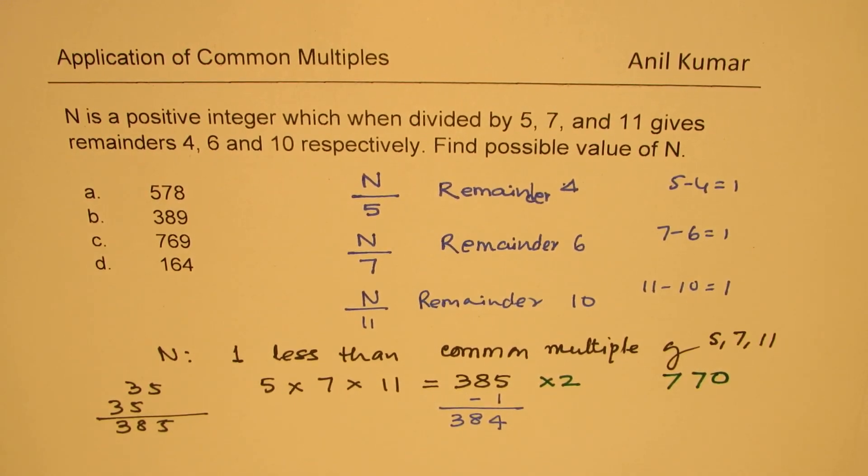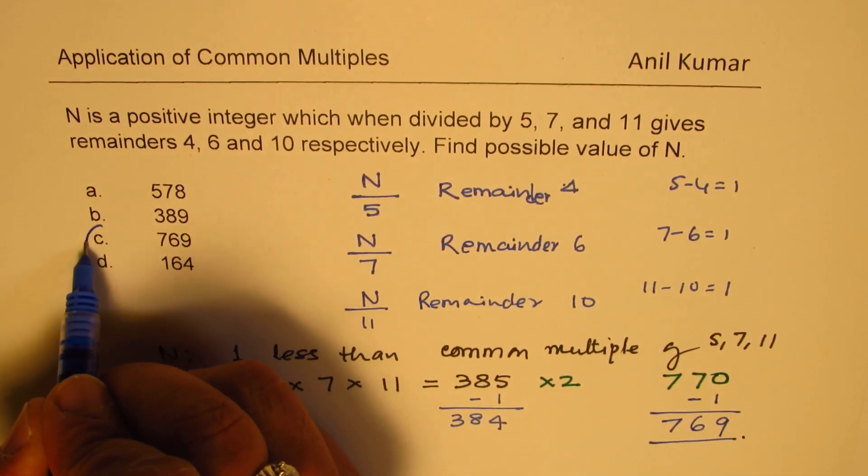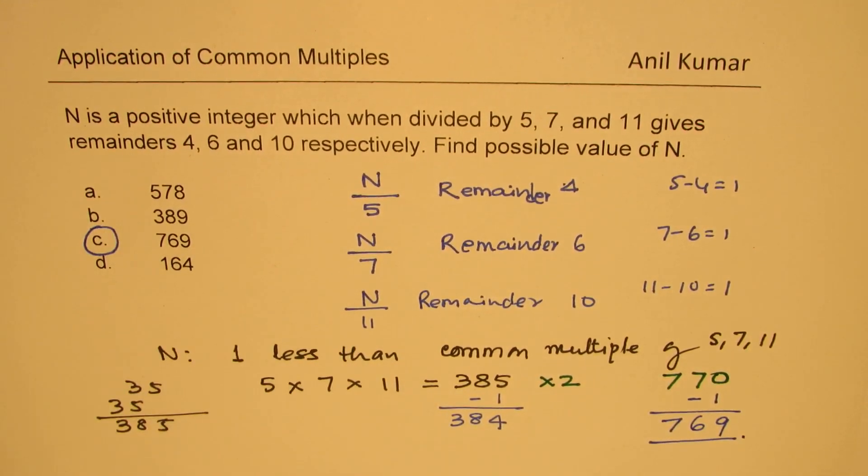Now from 770, which is again a common multiple, we'll take away 1. And what we get here is 769. So 769 should be the solution. Do you see that? Which is our option C.